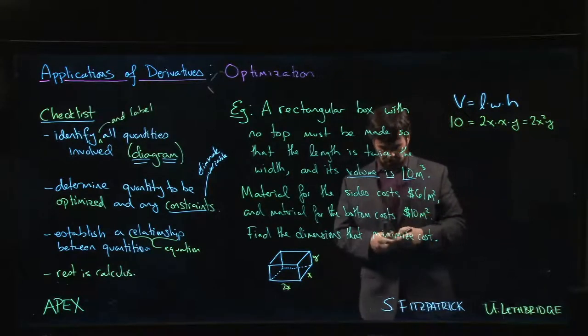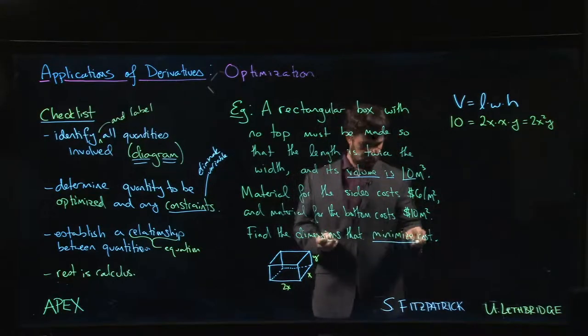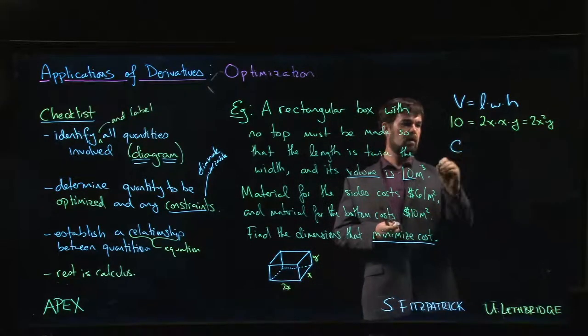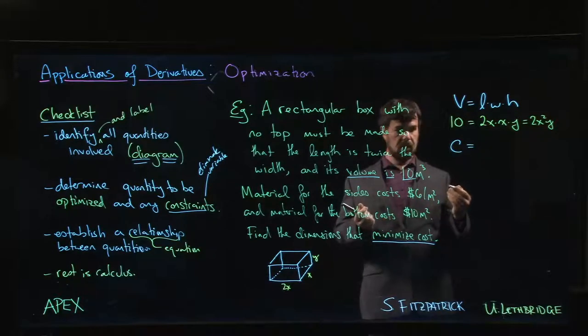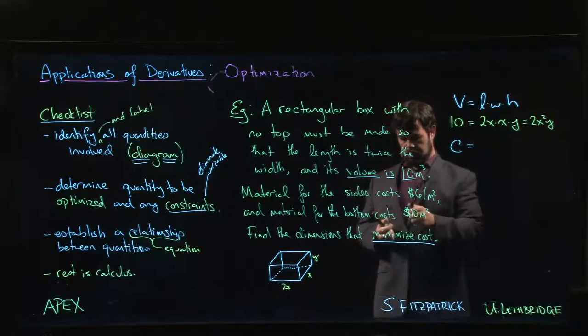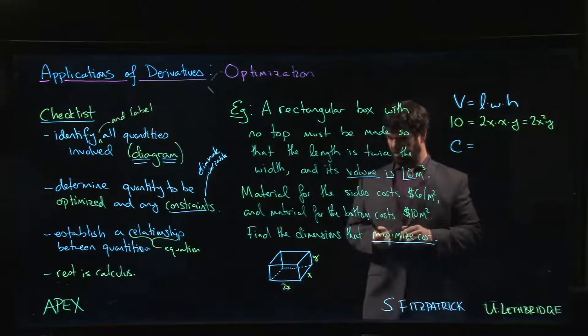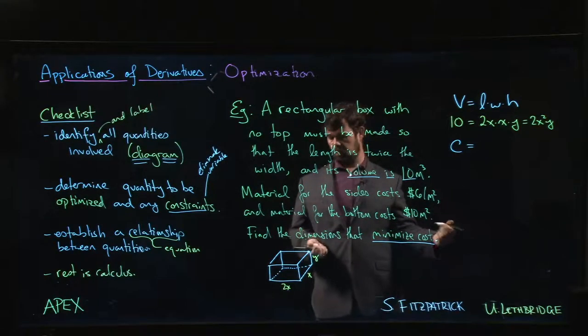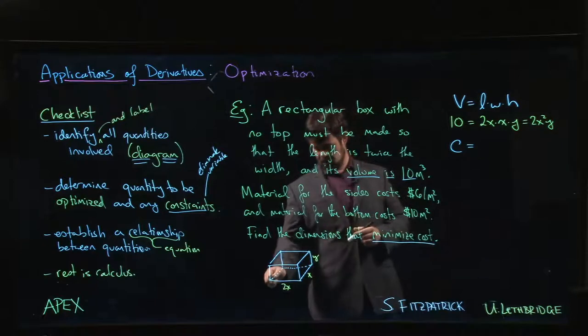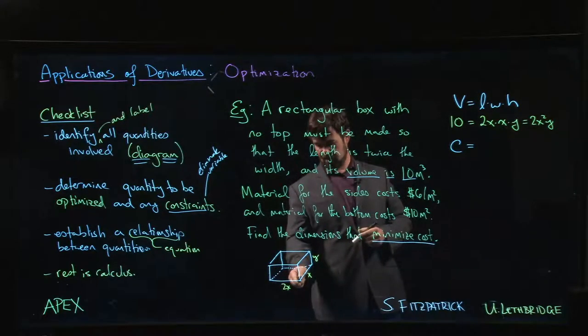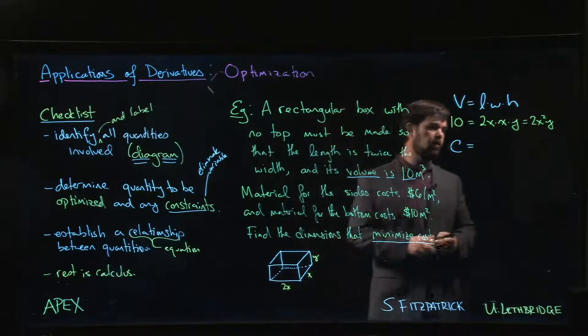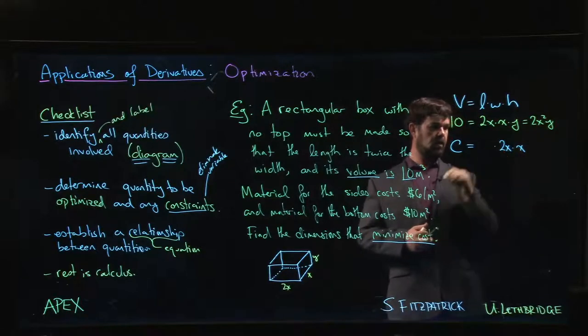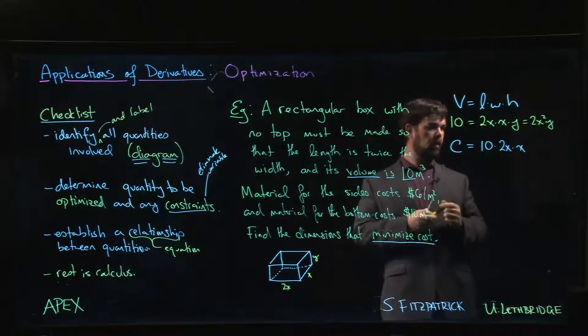Okay, what are we actually trying to optimize here? Here it is: minimize cost. Okay, so let's say C for cost. What are we trying to minimize? We've got these two prices here. So let's deal with the bottom first. Material for the bottom costs ten dollars per square meter. What's the area of the bottom? Well, the bottom has length 2x with x, so we have 2x times x times 10.